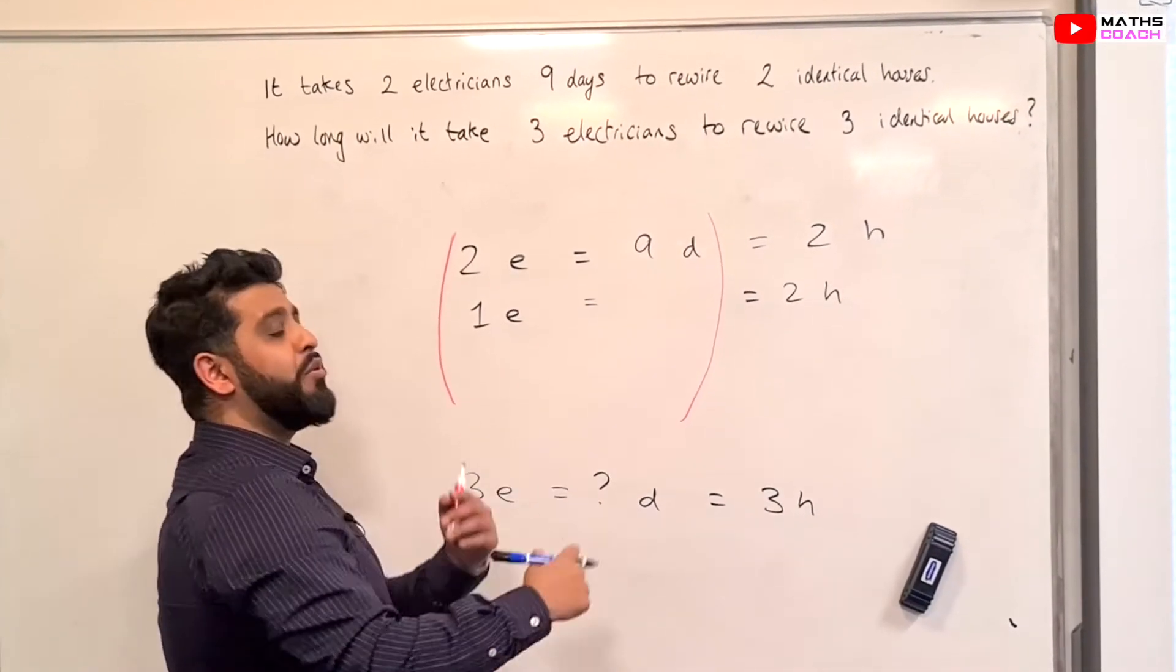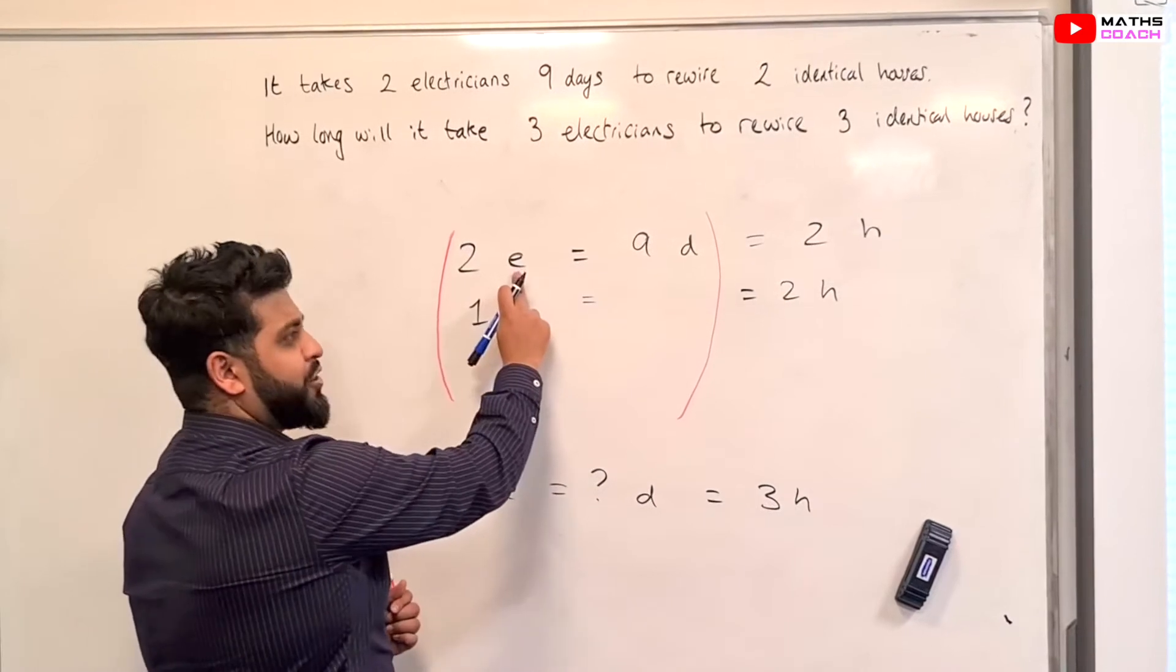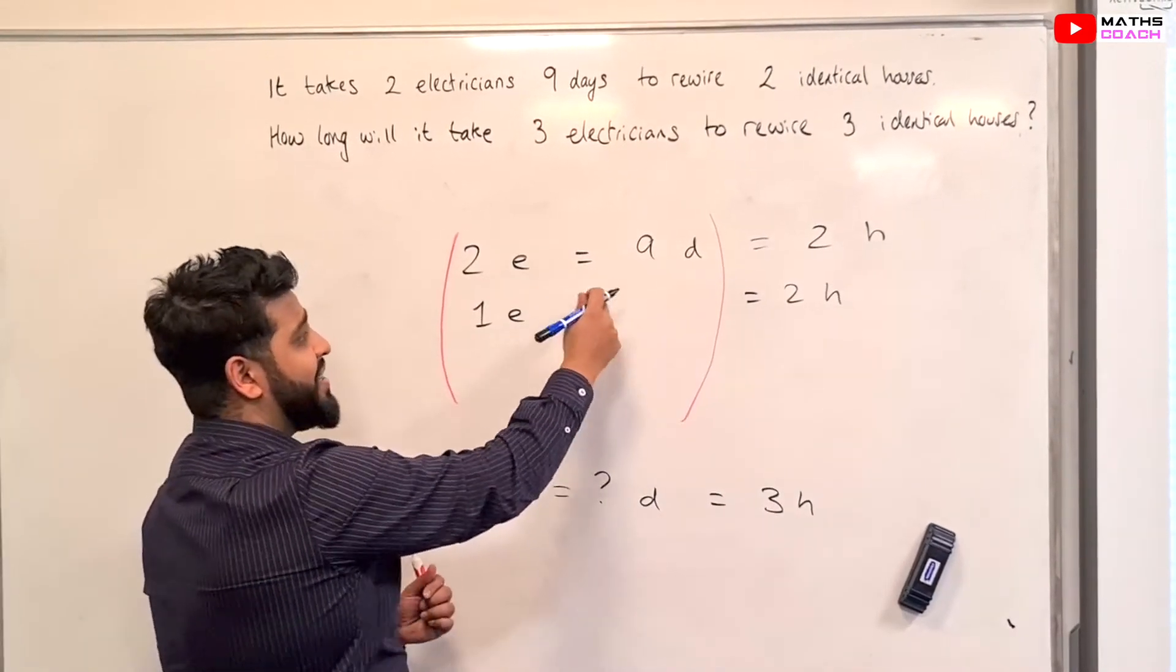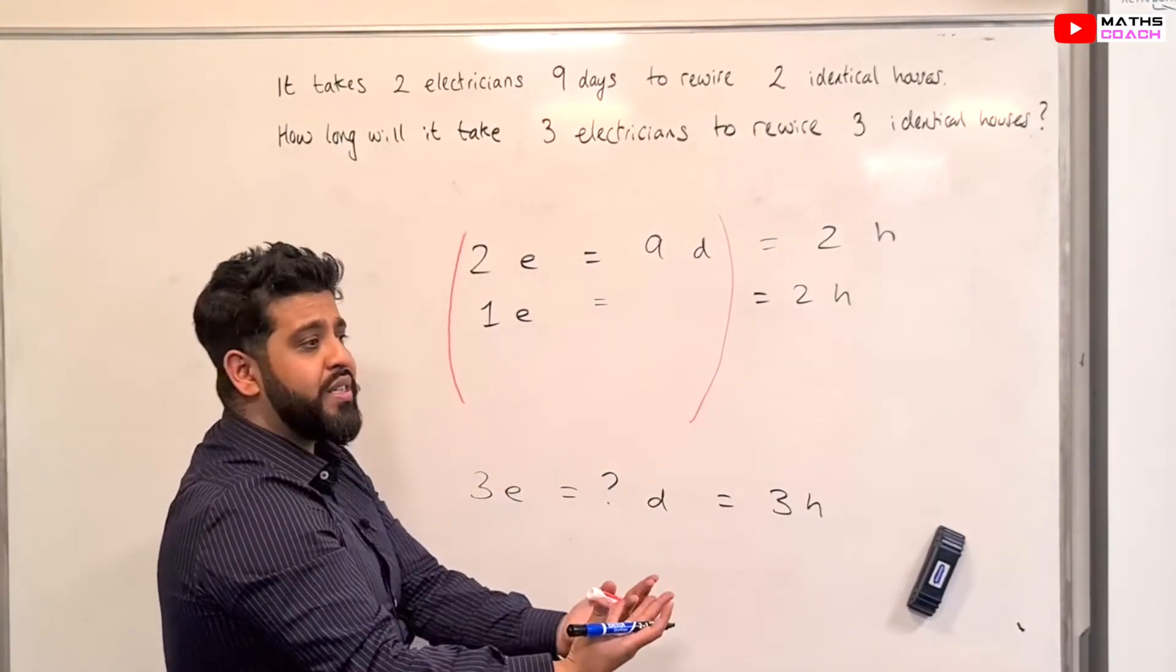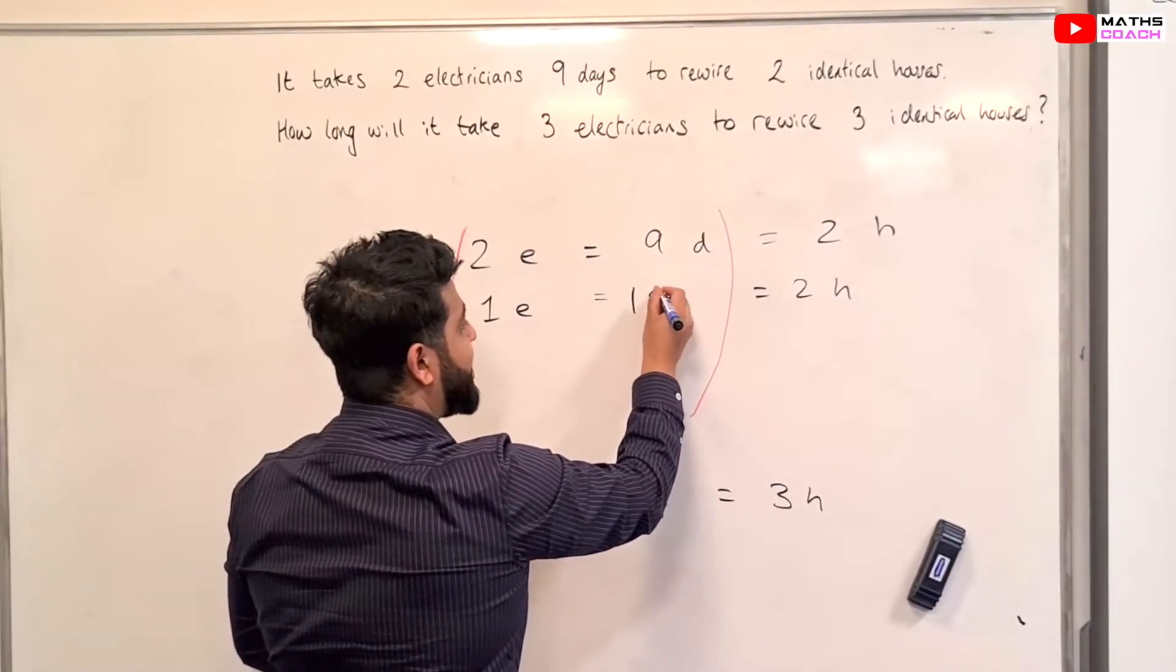Of course, it's going to take double the amount of time because if you've got 2 electricians working on the 2 houses and it takes 9 days and you've got 1 now, therefore the labor is going to increase and it's going to take 18 days.